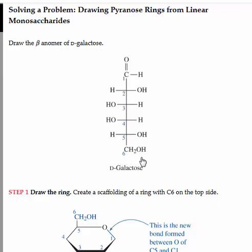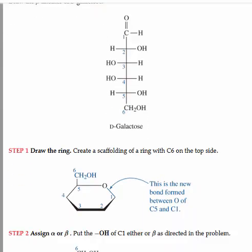We have the Fischer projection of D-galactose on the slide, and D-galactose is actually an epimer of D-glucose. The first thing we're going to do is draw the ring.